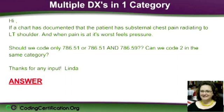The question was, if a chart has documented that the patient has substernal chest pain radiating to the left shoulder and when pain is at its worst feels pressure, should she code 786.51 or 786.51 and 786.59? She wants to know, can you code two codes in the same category?